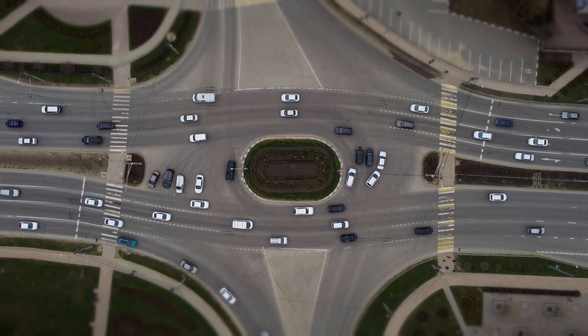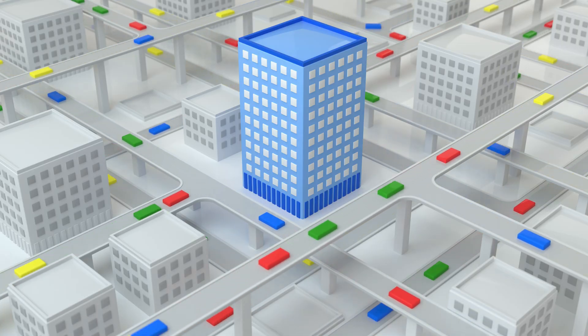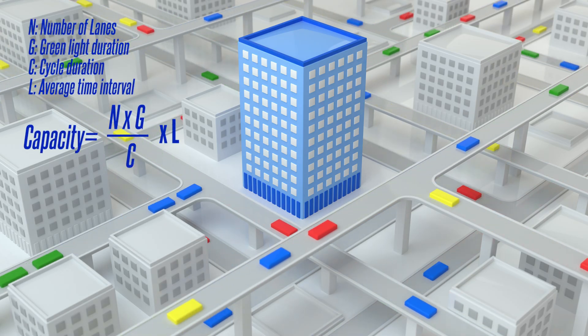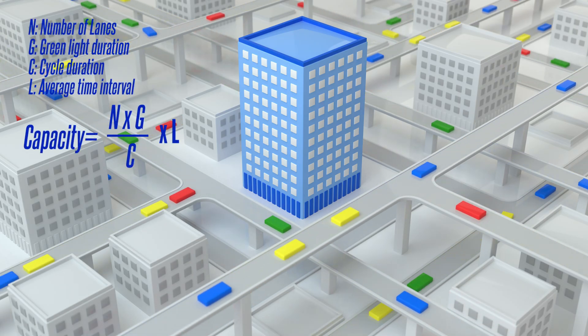These rules have formulas. For example, the timing of the lights at the intersection. This is the formula. The number of lanes, green light duration, signal cycle time.